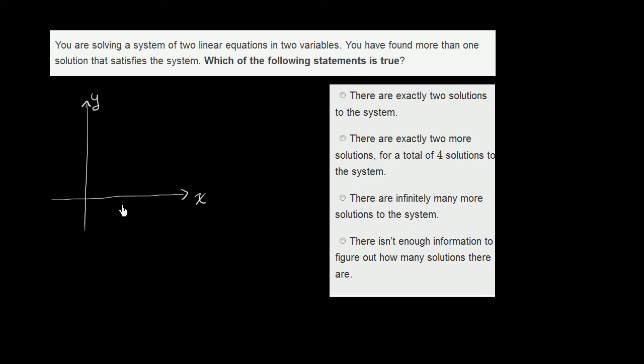So it's a system of two linear equations. So if we're graphing them, each of the linear equations in two variables can be represented by a line.